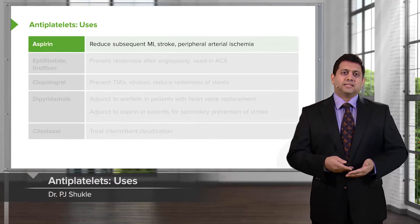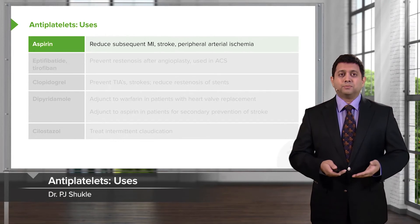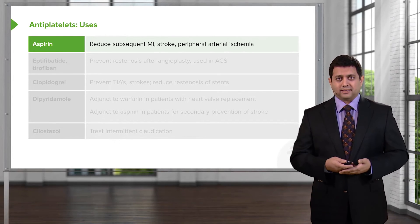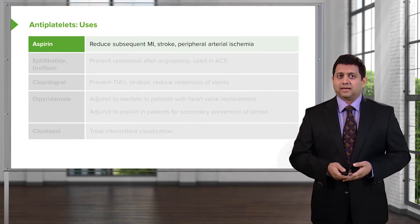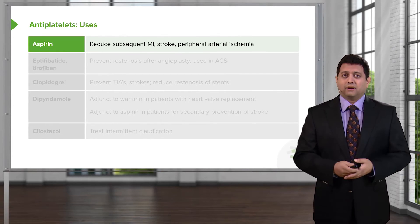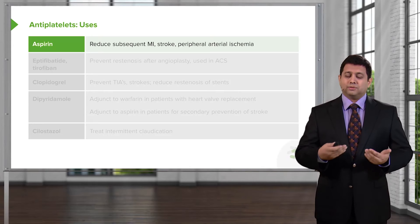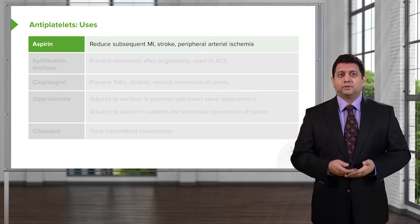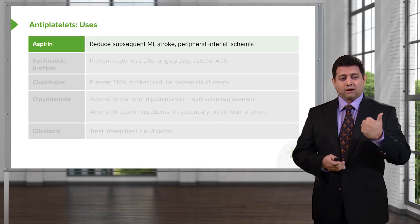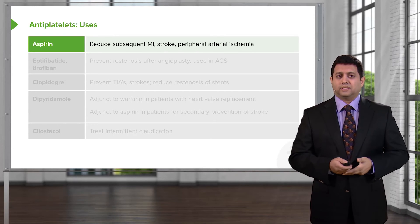In clinical practice, aspirin is the most commonly used antiplatelet agent. It reduces heart attacks — an aspirin a day keeps the cardiologist away. It also reduces stroke, so we use it frequently in preventing stroke. And it reduces peripheral arterial ischemia. The three areas of benefit are the heart, the brain, and the legs or peripheral arterial supply.